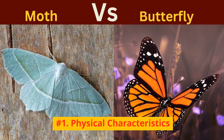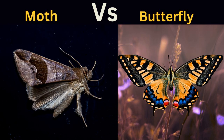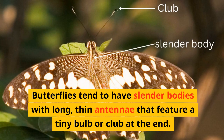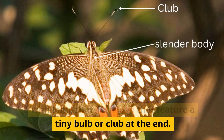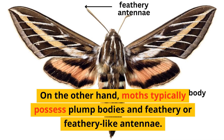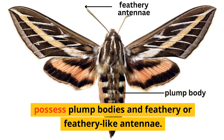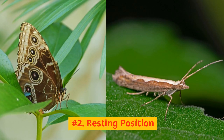Number 1: Physical characteristics. One of the first and most noticeable differences between butterflies and moths lies in their physical characteristics. Butterflies tend to have slender bodies with long, thin antennae that feature a tiny bulb or club at the end. Moths, on the other hand, typically possess plump bodies and feathery or feathery-like antennae.